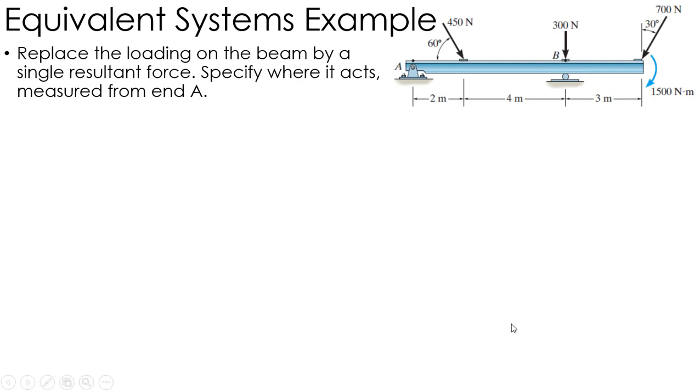Okay, so in this example, I'm going to replace this loading, these three forces and the couple moment, with just a single force located somewhere on the beam. So I want to find what that force is in vector form and determine its location from point A. In order to do that, I need to find my resultant force.